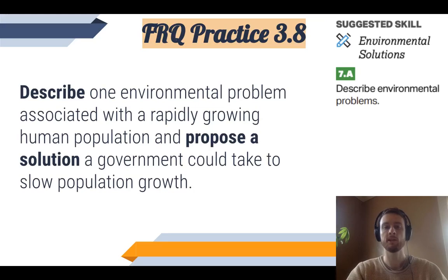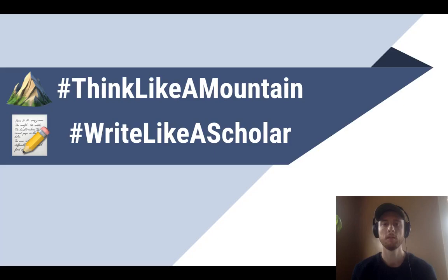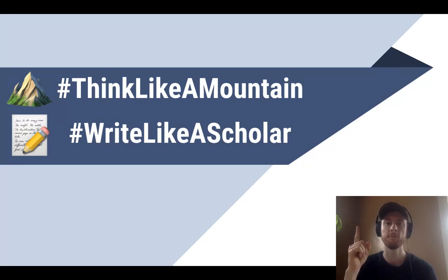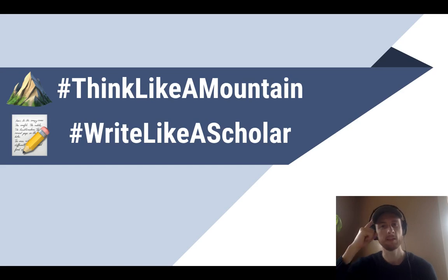Our suggested science skill for practice 3.8 today is describing an environmental problem. See if you can describe one environmental problem associated with a rapidly growing human population, then propose a solution that a government could take to slow population growth. Thanks for tuning in today — don't forget to like this video if it was helpful, subscribe for future APES video updates, and check out other notes over to the side. And as always, think like a mountain, write like a scholar.